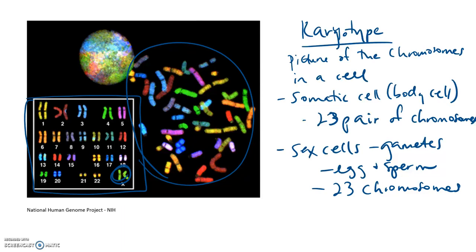We call the somatic cells in our body, we call those diploid. Diploid, or 2N, means two copies of each chromosome. The sex cells then are haploid, and we can just represent those with N, because there would only be one copy of each chromosome in either the egg or the sperm cell. All right, so let's get started. Thank you.